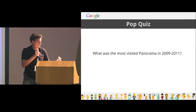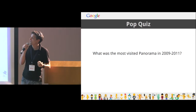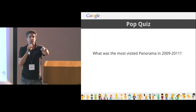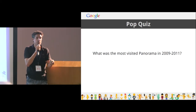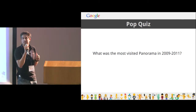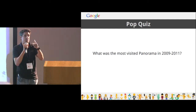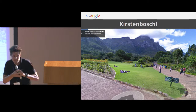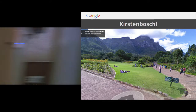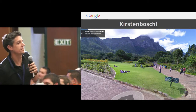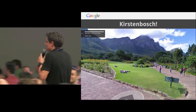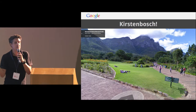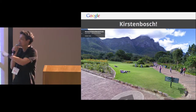Pop quiz — and I have giveaways, these little Android USB sticks. What was the most visited panorama from 2009 to 2011? Suggestions from the audience: Eiffel Tower, Times Square, Grand Canyon, Golden Gate Bridge, Google Plex, Table Mountain. The winner is Kirsten Bosch — which is amazing, right? It was on the front page of our Street View gallery, so anyone who went and searched Street View ended up on Maps, and this was the quintessential image they were handed. Source of pride nonetheless. Quite nice to walk by there earlier today.